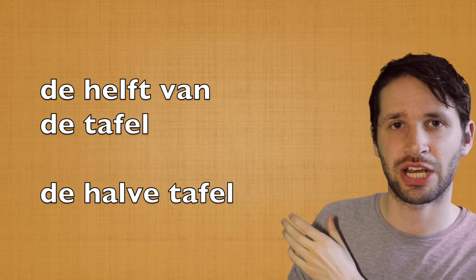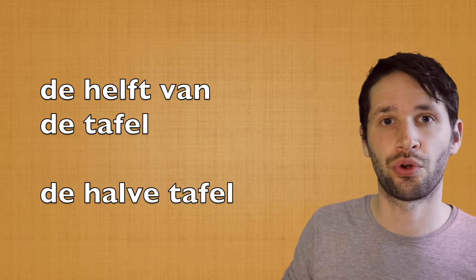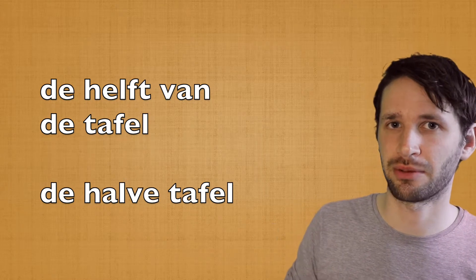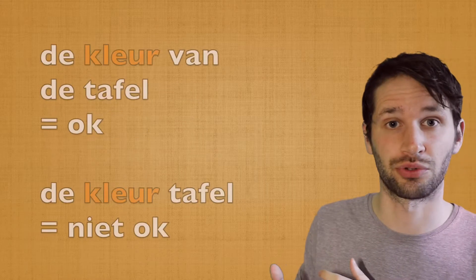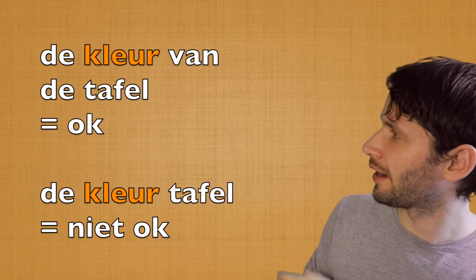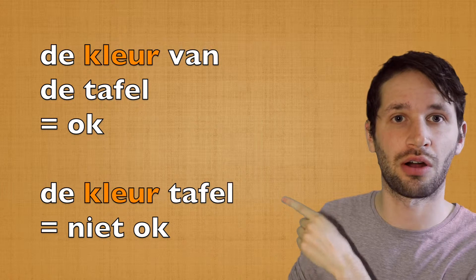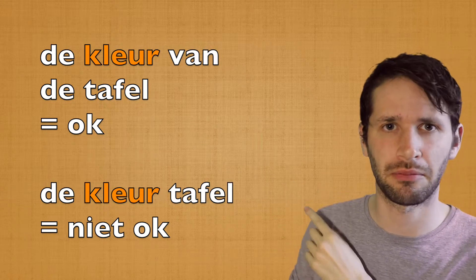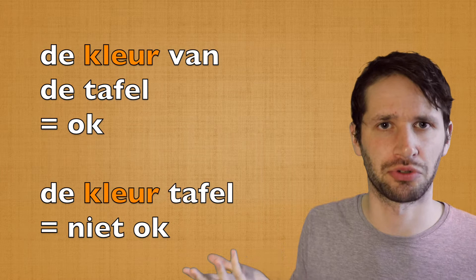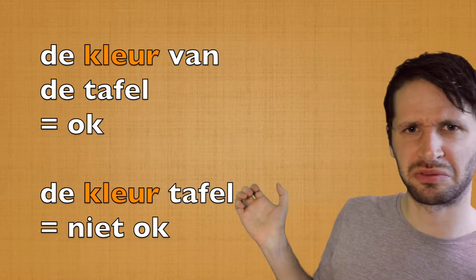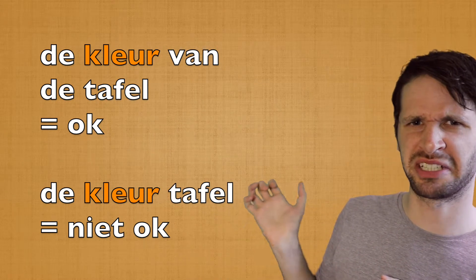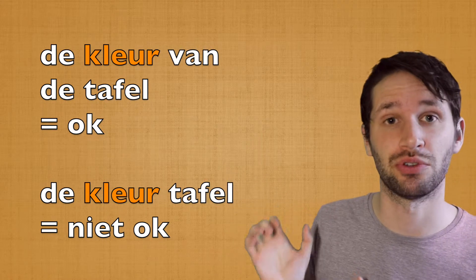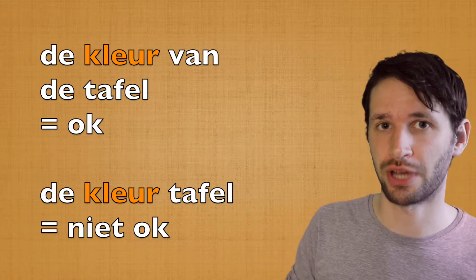You can easily check it by replacing the word with a noun or an adjective. For example, if you're using the noun color, you would say de kleur van de tafel — the color of the table. That sounds good, right? But de kleure tafel — the color-y table — that doesn't really sound good. So that's how you know where to use a noun.